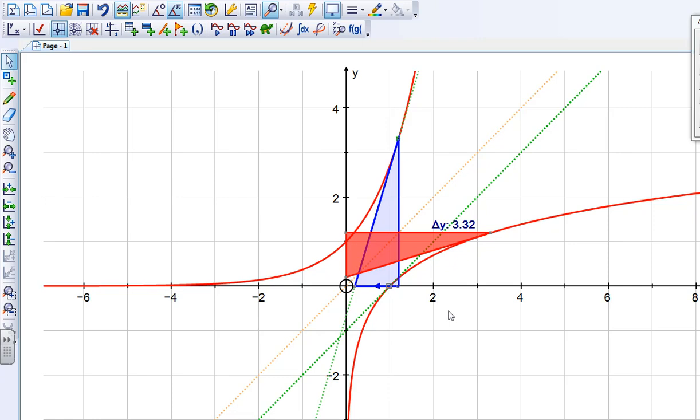Now just to check that our tangent to the curve log x actually sits along the line segment of the shape, we can move it along, and we can see that yes, it does.